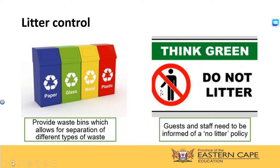Another good environmental practice is litter control. We should provide waste bins to separate different types of waste — separate bins for paper, glass, metal, and plastic. Guests and staff need to be informed of a no-litter policy, as we should be controlling the amount of litter that we generate.